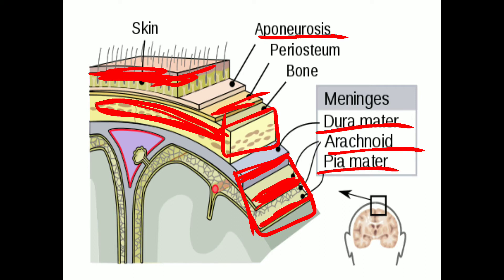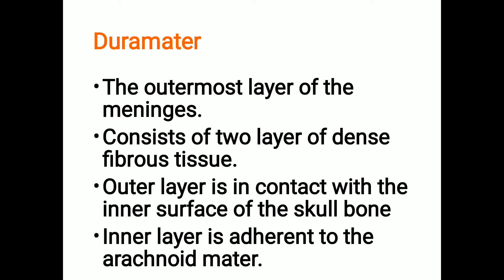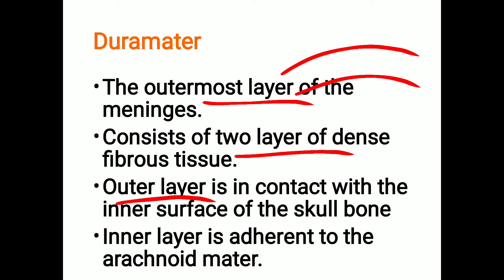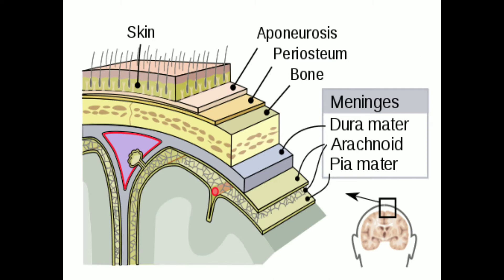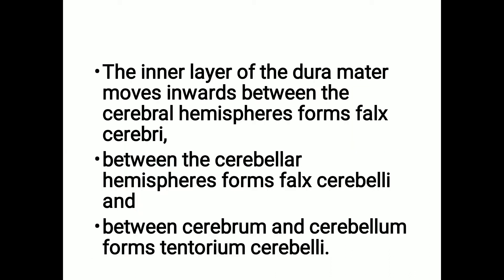Dura mater is the outermost layer of the meninges and consists of two layers of dense fibrous tissue. The outer layer is in contact with the bone of the skull, and the inner layer is adherent to the middle layer of the meninges, that is the arachnoid mater. The inner layer of the dura mater moves inwards between the cerebral hemispheres.